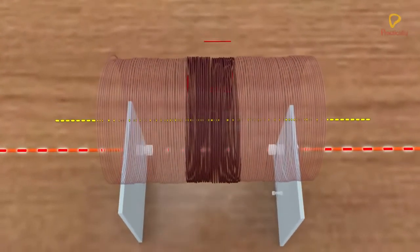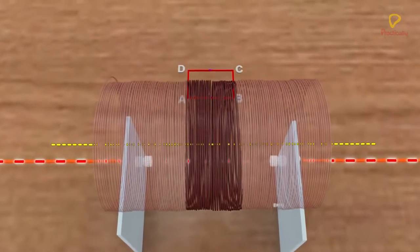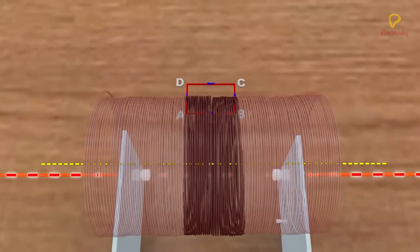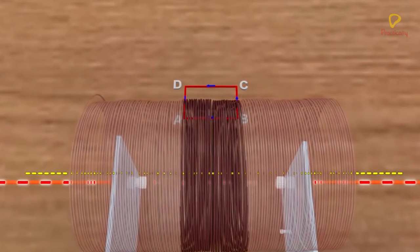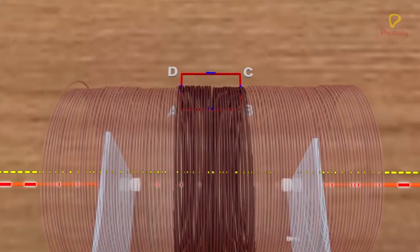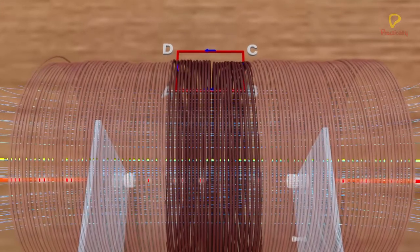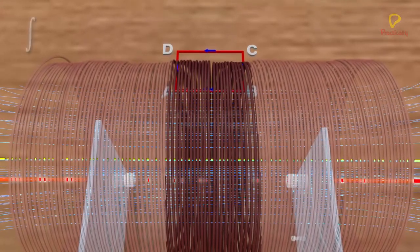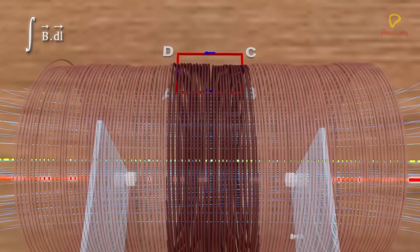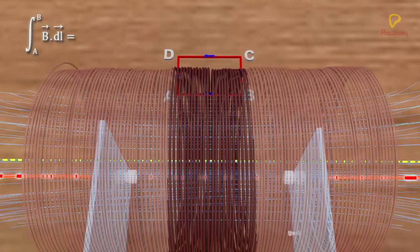Consider an Amperian rectangular loop ABCD near the axis of the solenoid. Line AB is parallel to the axis and is therefore parallel to the magnetic field B inside the solenoid. Hence, integral B dot dL from A to B is equal to BL.